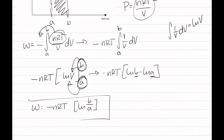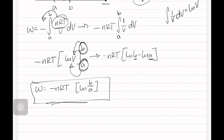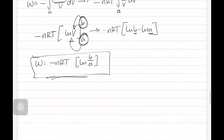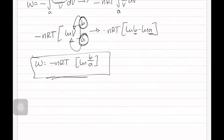So your work is going to become negative nRT times the natural log of B over A — and that is your final answer. We can also write this in terms of Vf and Vi: if A equals Vi and B equals Vf, substituting in, work is equivalent to negative nRT times the natural log of Vf over Vi.